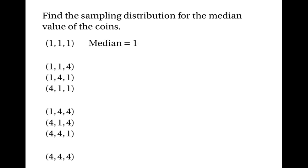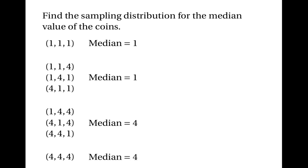Now let's work out the sampling distribution for the median value of the coins. In the first category (1,1,1), the median is one. In the second category, with two cistercii and one denarius, if you write the values in order you always get one, one, four — so the middle value is one. In the third category, ordering gives one, four, four, so the median is four. And obviously in the final category (4,4,4) the median is four. So there are two possible values of the median: one and four.